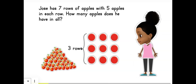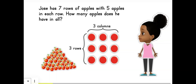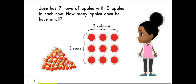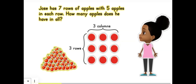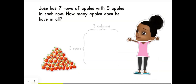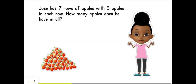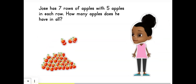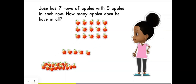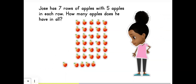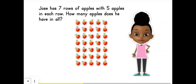These counters show three rows and three columns. Remember, rows go across, left to right, and columns go up and down. Let's look at the problem together and create an array. Jose has 7 rows of apples with 5 apples in each row. How many apples does he have in all? Let's start by arranging the apples into 7 rows. Each row will have 5 apples. How many apples do we have in our array?